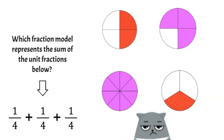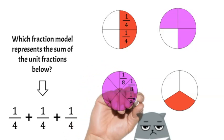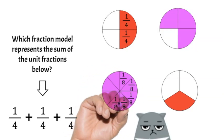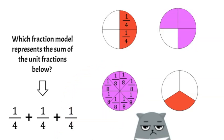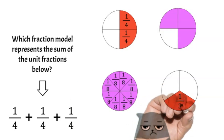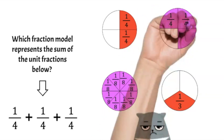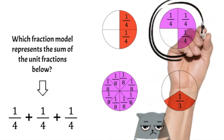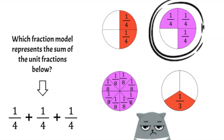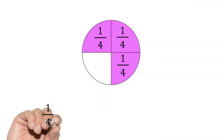Which fraction model represents the sum of the unit fractions below? The first model has pieces that are each one-fourth, so the sum would be one-fourth plus one-fourth. The second model is made up of eighths — it can't be that one. The third only has one piece shaded, which is one-third — it can't be that one either. The correct match has three pieces shaded and each piece is one-fourth, just like the sum.